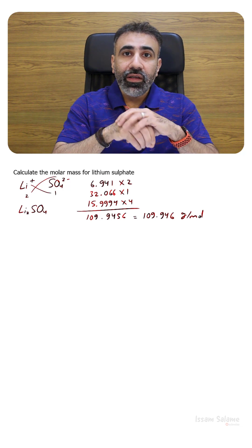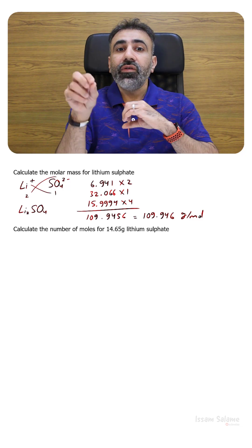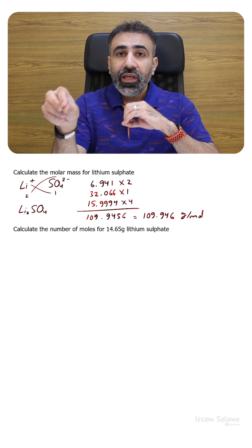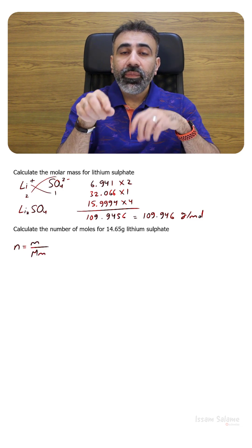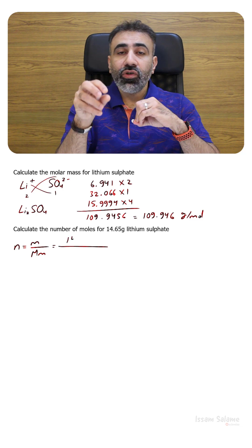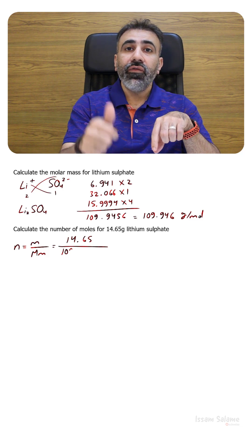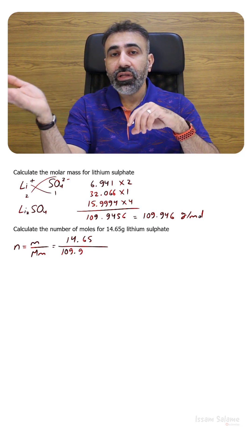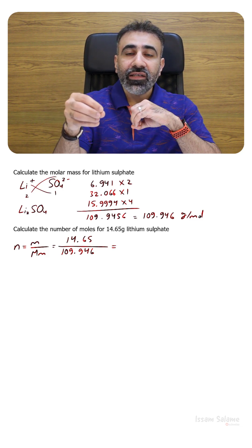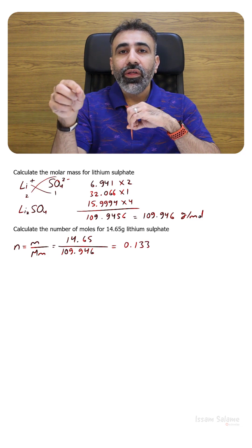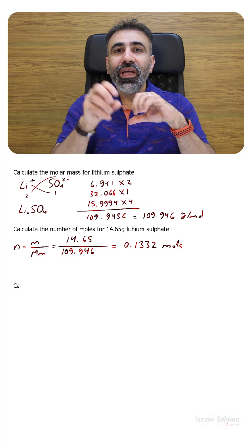Now if we want to find the number of moles of 14.65 grams of lithium sulfate, we use the formula N is equal to M divided by MM. The mass taken from the question is 14.65 and the molar mass we just calculated is 109.946. The answer is going to be equal to 0.1332 moles of lithium sulfate.